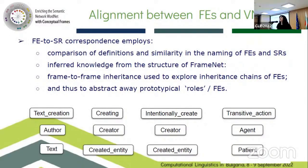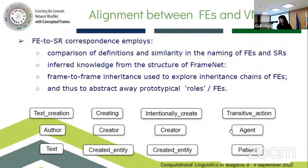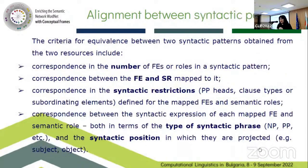The correspondence between the two resources was done by abstracting away from more particular roles to more general ones. For example, the 'text creation' frame is the child of 'creating', which is the child of 'intentionally create', which is the child of 'transitive action' — four frames in an inheritance relation from most specific to most general. The frame elements corresponding to subject and object — author and text — when abstracted up along that path, yield agent and patient.